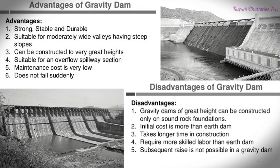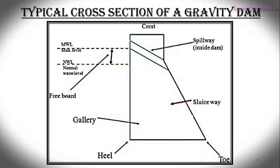Now the disadvantages of a gravity dam: dams of great height can be constructed only on sound rock foundations. The initial cost of construction is much higher than that of an earthen dam, and the construction time is also much longer. Very skilled labor is required. Last but not least, subsequent raising is not possible in a gravity dam.